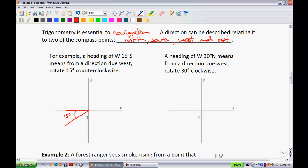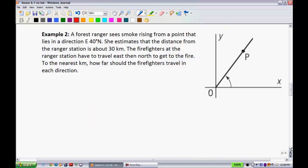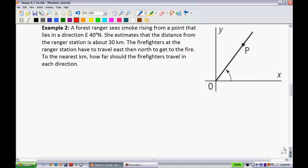Alright, another example. A heading of west 30 degrees north means from a direction due west, rotate 30 degrees clockwise. So this one's saying that we go west, but this time we're going 30 degrees north of that. So that would be this angle like so. Okay, that would represent 30 degrees right like that. Alright, so you're going to see that a lot of what we do in this unit, we're going to be dealing with something called bearing, which we'll talk about in the future here, and these different compass coordinate points.